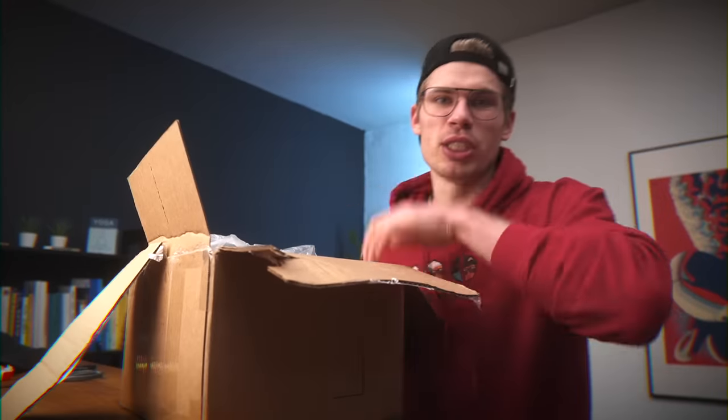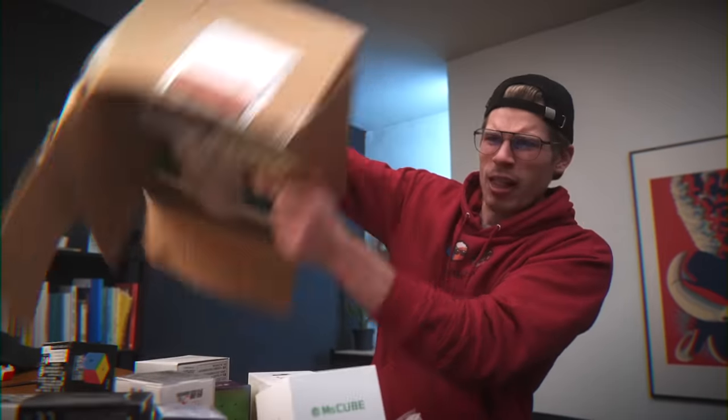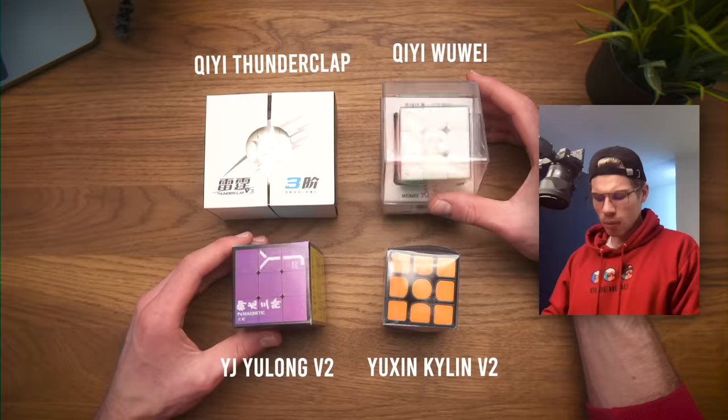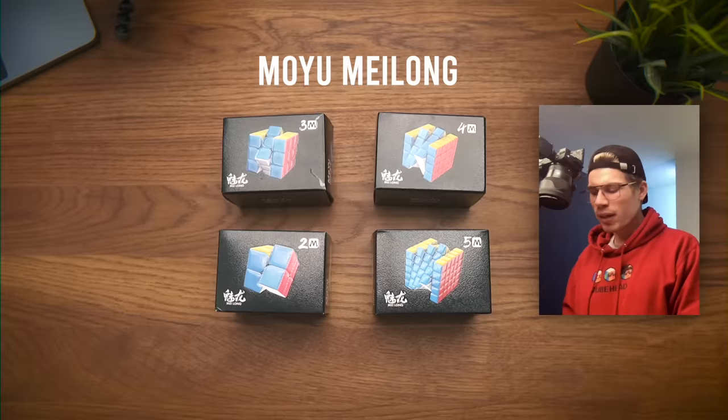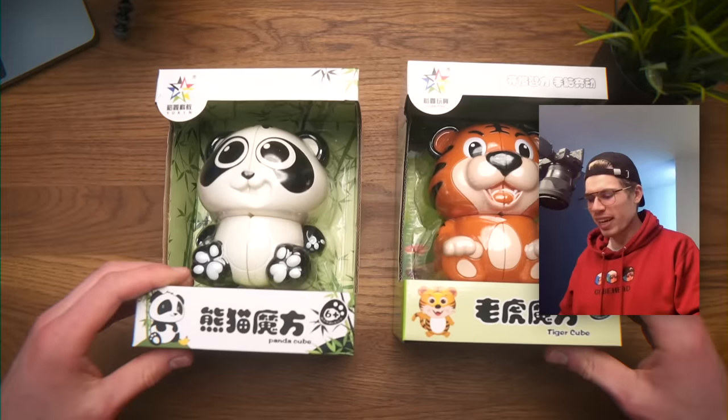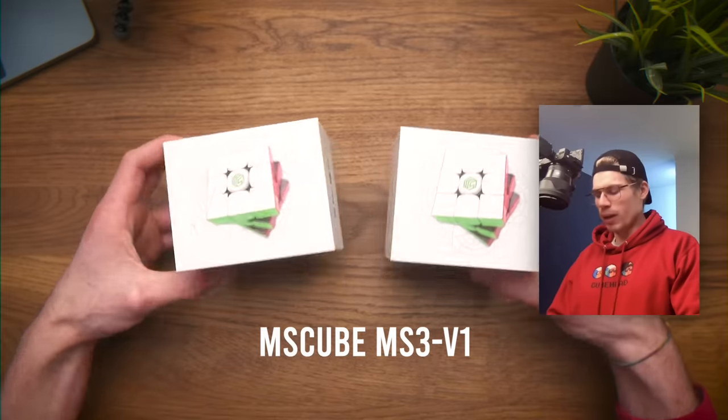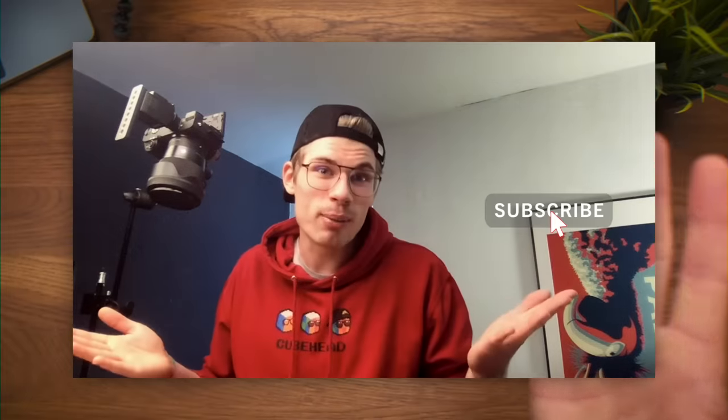This box is full, let me show you. Let's see what we have: a bunch of budget cubes, the Moyu Meilong, my first square-1, my first clock, my first skewb, the tiger and the kangaroo, and probably most exciting, some hand sanitizer. But seriously, most excitingly we have the new MS cubes. You can see all the puzzles in the timeline, you can watch the full video, or skip to what interests you most.